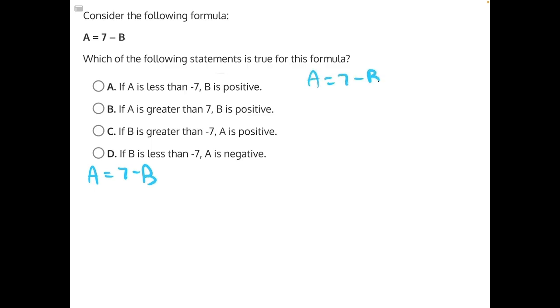We'll have to do opposite operations to move our variables around. So we'll add B to both sides first. Then we will subtract A from both sides. That'll give us B is equal to 7 minus A. So we have A equals 7 minus B, and B equals 7 minus A. And these will help us find our correct answer.